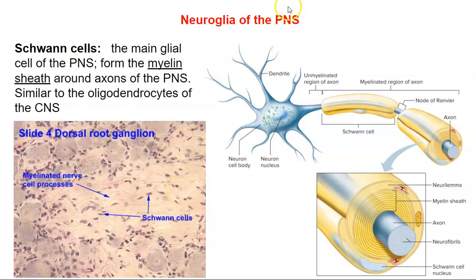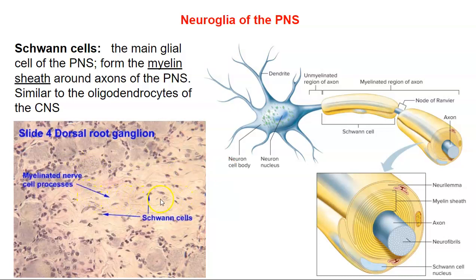Now let's look at neuroglia of the peripheral nervous system — we're no longer in the brain and spinal cord, now we're out in the spinal nerves. There are only two types of cells. The first is the Schwann cell, the most abundant cell in the peripheral nervous system. The Schwann cell is similar to the oligodendrocyte of the central nervous system in that it's responsible for myelinating the peripheral nerves. Here's what it looks like histologically: these are the cell bodies of neurons, and here we have Schwann cells wrapping around the nerve fibers and myelinating those axon fibers.